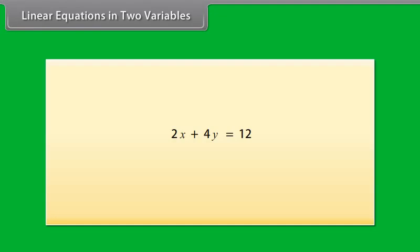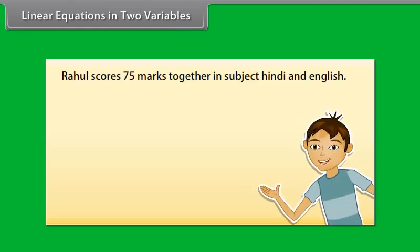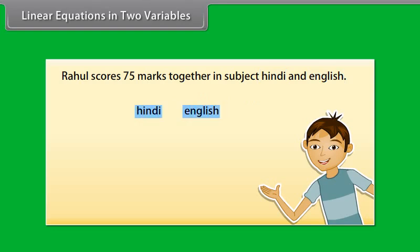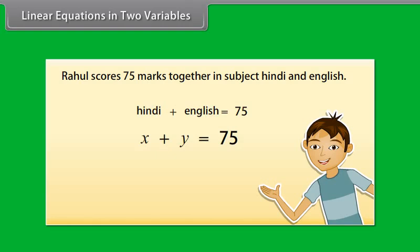A linear equation can have more than one variable. Here we will study linear equations in two variables. Let's take an example: Rahul scores 75 marks together in Hindi and English. The marks of neither subject are known — there are two unknown quantities. Let us use X and Y to denote them. The marks scored in Hindi is X and in English is Y. So X plus Y equals 75 is the required equation, which is an example of a linear equation in two variables.